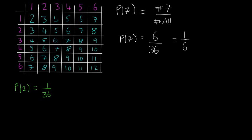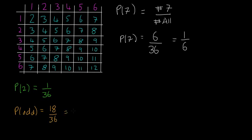We'll also look at the probability of getting an odd number. So P of getting an odd number — if you were to count all the different odd numbers in here, so the 3s, the 5s, the 7s, the 9s, and the 11s, and count them all up, we'll end up with 18 over 36. So the probability of getting an odd number as your result is exactly half.